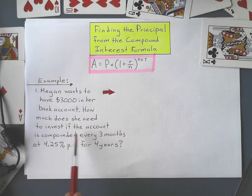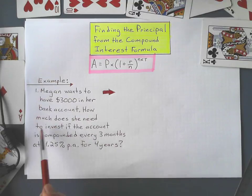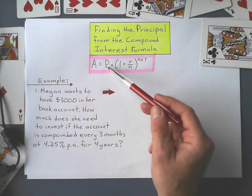She's going to put it into an account that's compounded every 3 months at 4.25% per annum for 4 years. So when the question says how much does she need to invest, that means we're figuring out the principal.